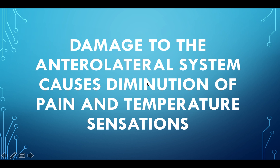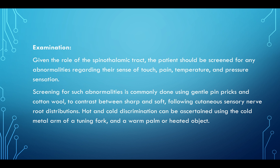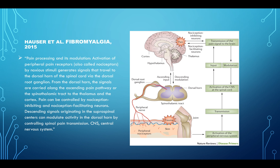Damage to the spinothalamic tract causes diminution of pain and temperature sensation. Screening for abnormalities is commonly done using gentle pinpricks or a pinwheel — use disposable pinwheel heads to avoid cross-contamination. You can also use cotton wool and have them contrast between sharp and soft, or hot and cold. If they have an exaggerated response, that might indicate negative plasticity in the pathway — conditions like reflex sympathetic dystrophy or CRPS.